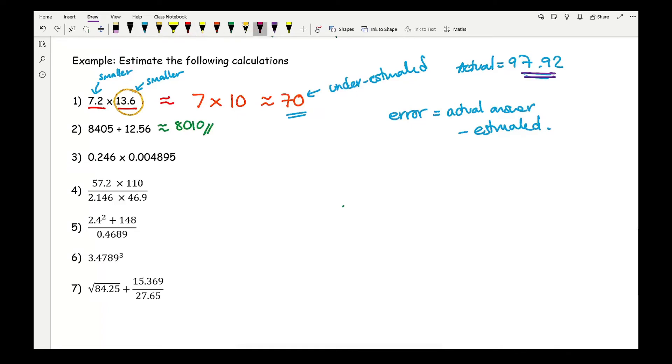Now moving on to question 3, I've got 0.246 times 0.004895. So again, what I'll do is look at the first sig fig, which in this number is 2, and that represents 0.2. And multiplied by the first sig fig in the next number, which is going to be 5, so it's going to be 0.005. And again, all I need to do is simply work that out, and estimating that answer would give me an answer of 0.001.